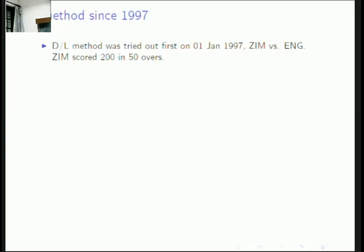The first game where it was tried out was in 1997 — it took quite a few years to develop, about four and a half years after the 1992 World Cup game. Zimbabwe versus England: Zimbabwe played 50 overs and scored 200 runs, and rain shortened the game to 42 overs during England's innings. The Average Run Rate method would give England a target of 169, but the Duckworth-Lewis target was 186.